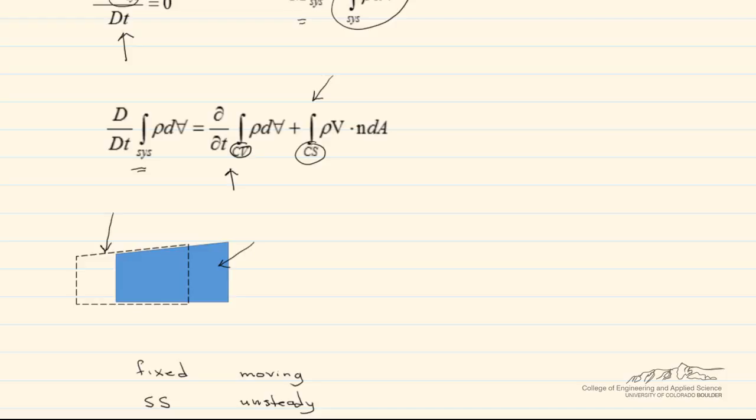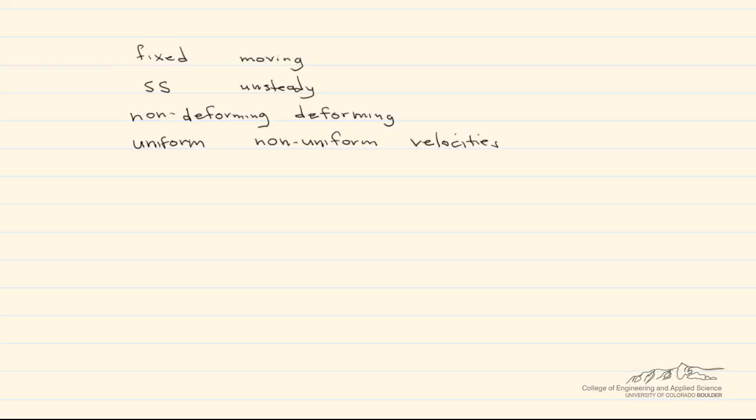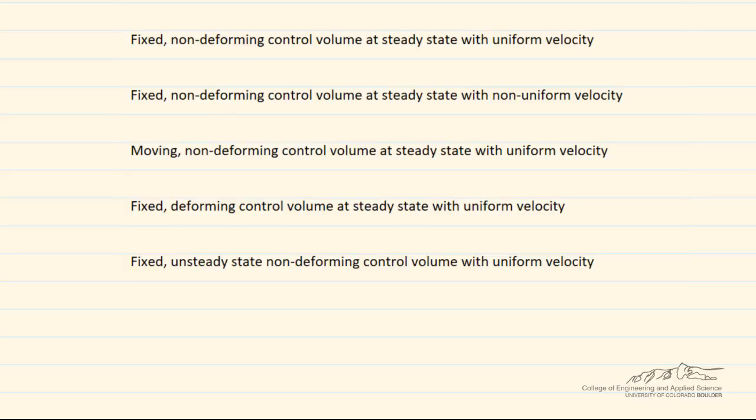This allows us to solve problems that have varying conditions. Here's a number of examples where we use this equation. We can have a fixed, non-deforming control volume at steady state with uniform velocity, and that's the easiest kind of problem to analyze.